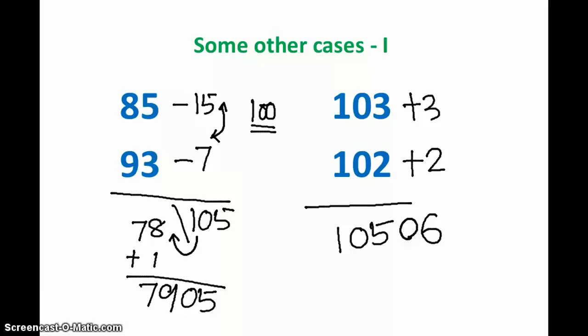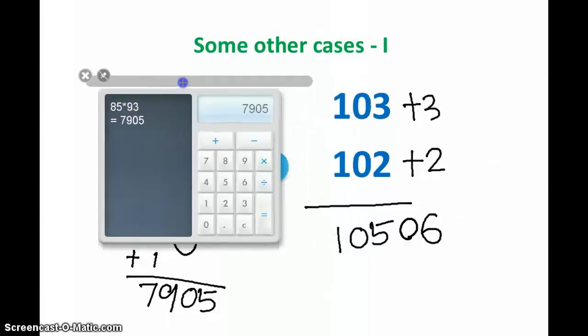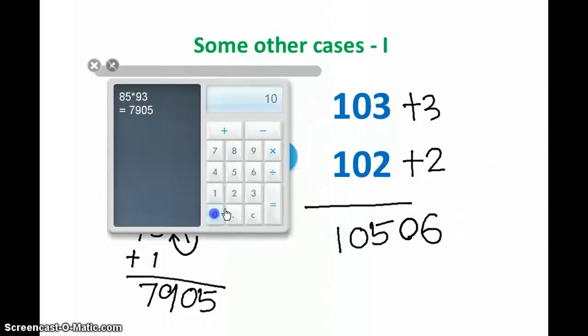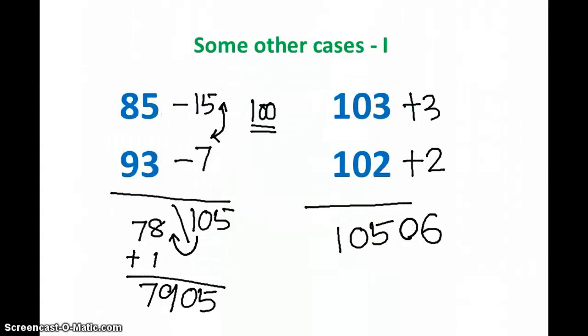Let's check out: 103 into 102 gives 10506. So this is quite simple. With a little bit of modification we are getting the same answer or the same result in very less time.